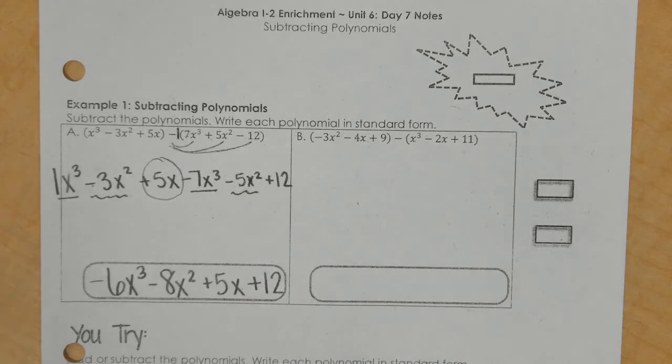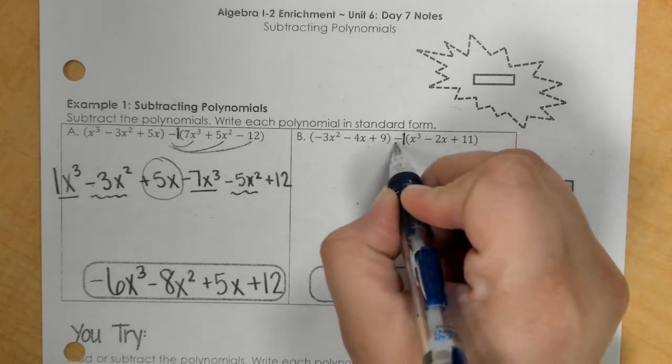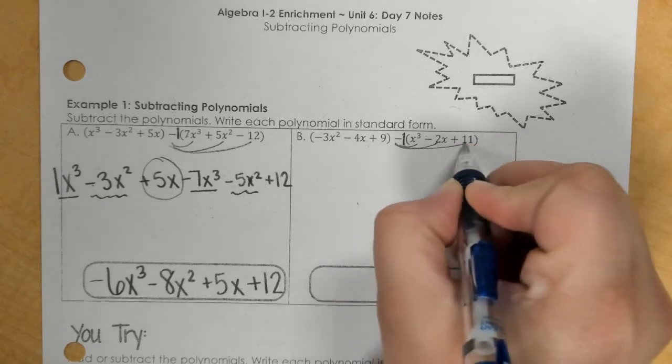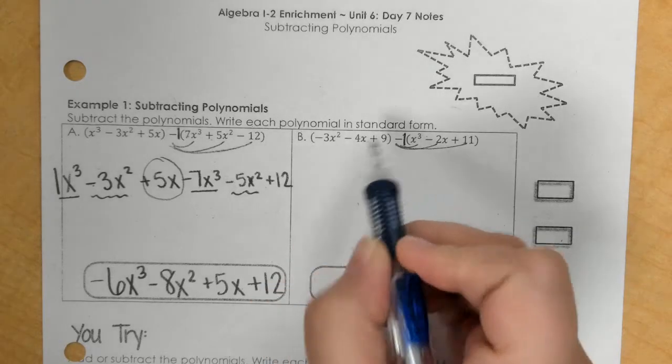So in part B, same idea, make this a negative. And remember, you're just changing the signs of the second set of parentheses. So the first one stays the same.